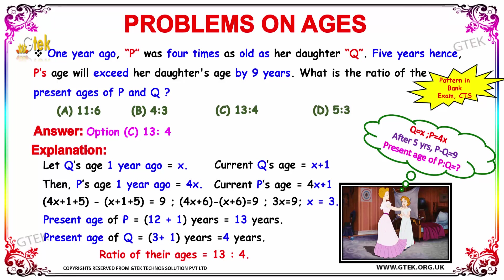1 year ago, we are assuming Q's age to be X. And it is given that 1 year ago, P was 4 times as old as her daughter, so it is 4 times X. Their current ages can be calculated as plus 1, giving X plus 1 and 4X plus 1.